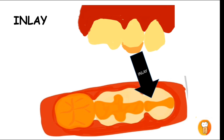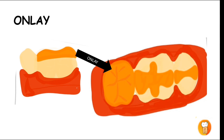In an inlay restoration, as seen in the picture, the restoration fits between the cusps and does not include the cusps themselves. In contrast, an onlay covers the cusps as well as the space between them — it covers the entire occlusal surface or at least two cusps of the tooth. The key difference is that an inlay only covers the space between the cusps and does not include the cusps.